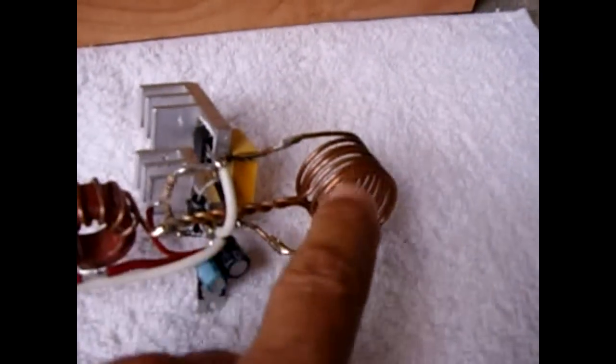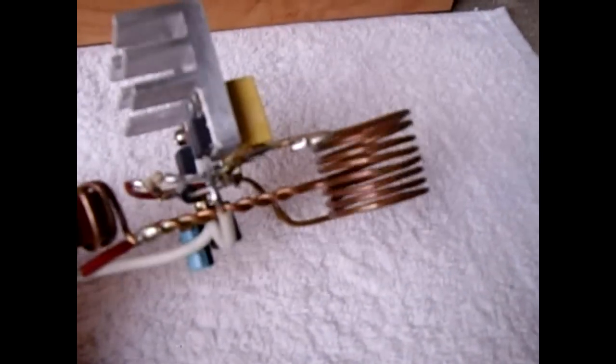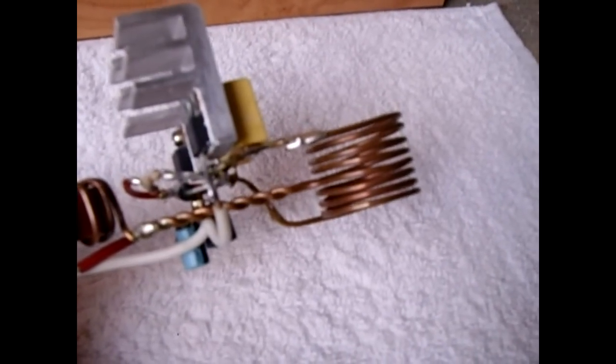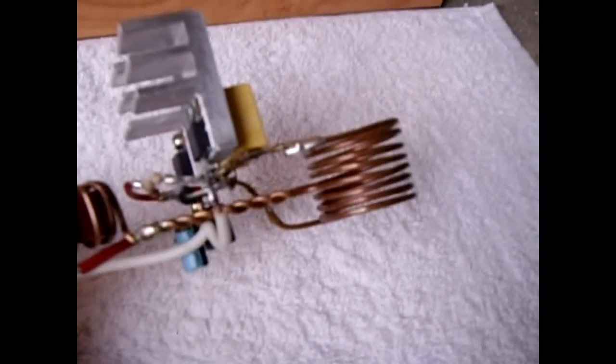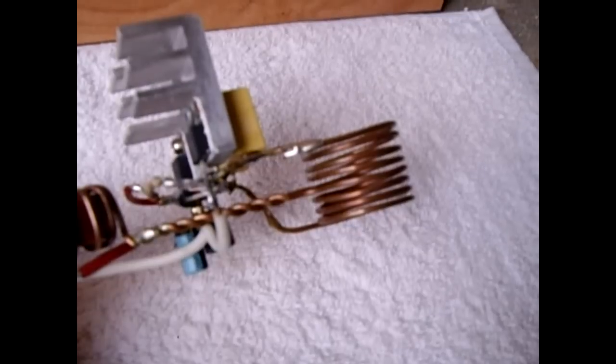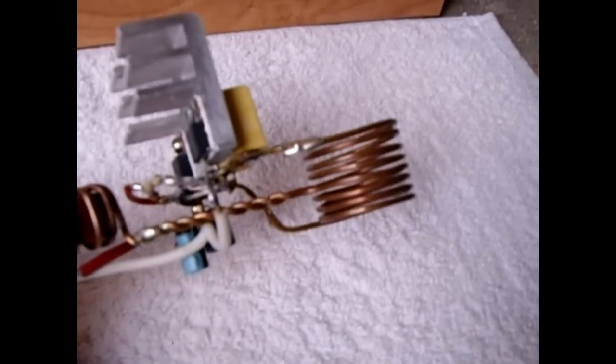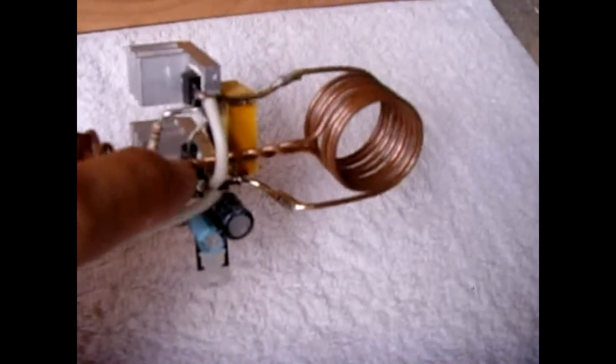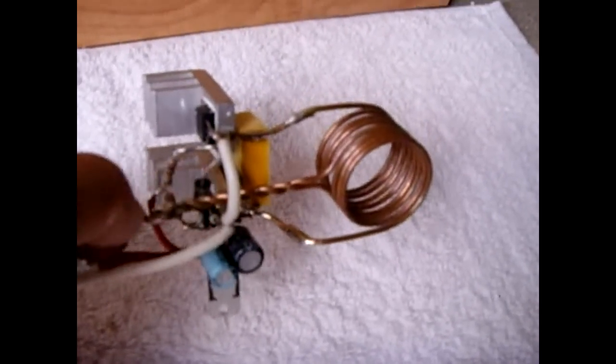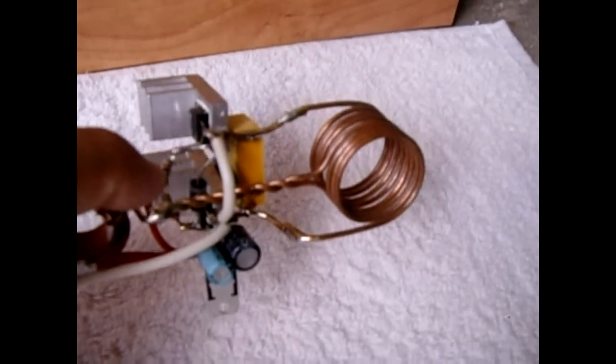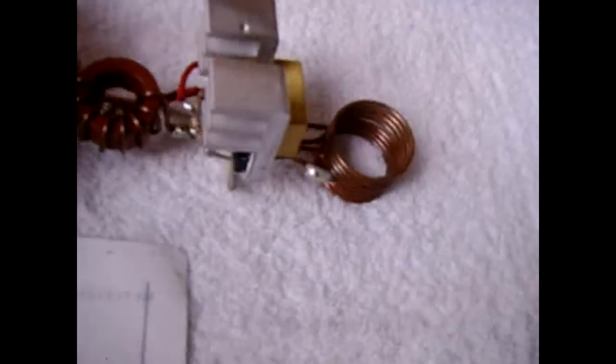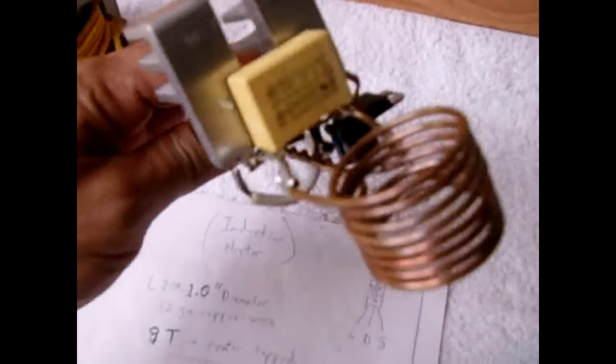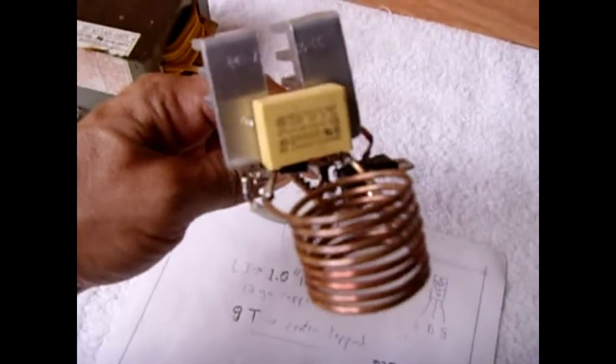Now the working coil, which is this part right here, I made it out of a one inch diameter pipe and I wound nine turns with a center tap of four and a half, and that's where you can see the center tap is these two twisted together. So you twist them in the middle and you'll have each end.